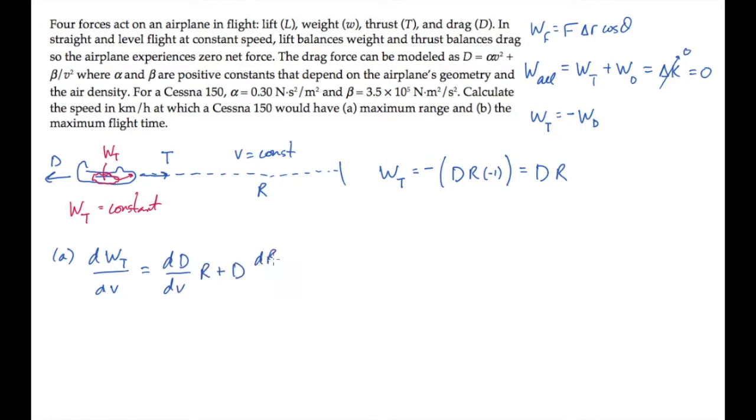The work done by thrust on the whole trip is a constant, so its derivative equals zero. And we want to maximize the range with respect to the speed V. So this term goes to zero. And that means that the term in the middle must also equal zero.